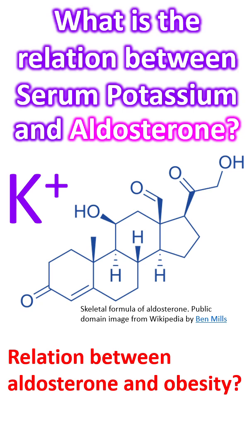Plasma aldosterone levels correlate with body mass index and there is higher prevalence of hyperaldosteronism in obesity. Weight loss is associated with reduced aldosterone levels. Adipocytes have functionally active aldosterone synthase and also produce components of the renin-angiotensin system like angiotensin II.